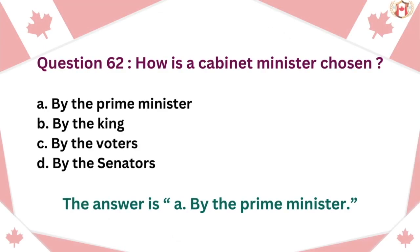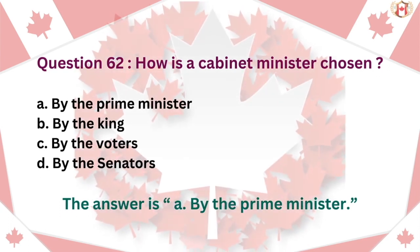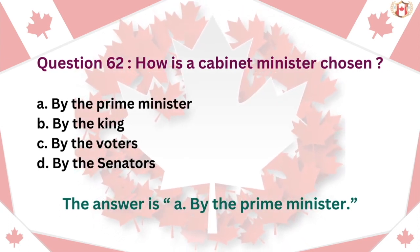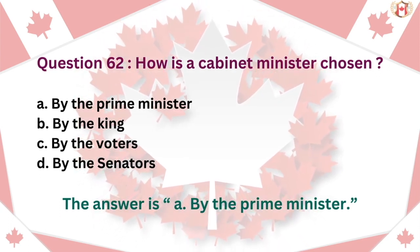Question 62: How is a Cabinet Minister chosen? A. By the Prime Minister, B. By the King, C. By the Voters, D. By the Senators. The answer is A. By the Prime Minister.